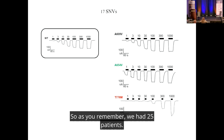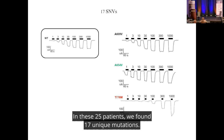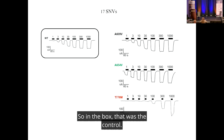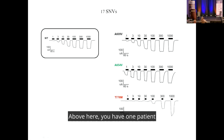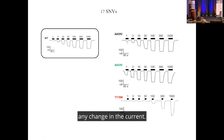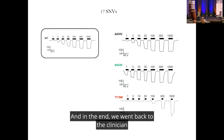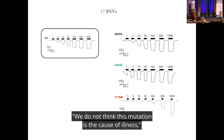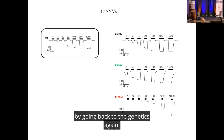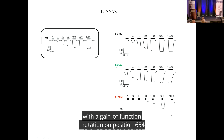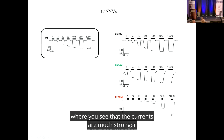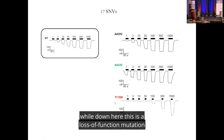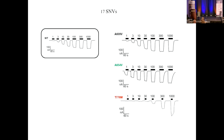In 25 patients, we found 17 unique mutations. Three examples from the lab: a mutation at position 609 showed no change in current — after further testing, we concluded this mutation is likely not the cause of illness and recommended the family return to genetics. A mutation at position 654 showed much stronger currents — a gain-of-function. A mutation at position 776 showed almost no current at all — a loss-of-function. So these are clear examples of gain-of-function and loss-of-function mutations measurable in the oocyte system.